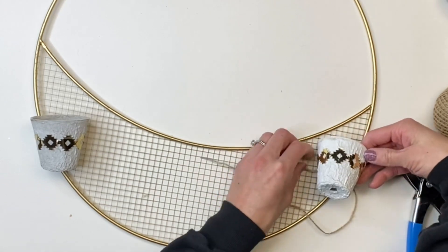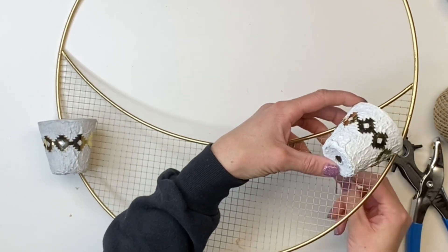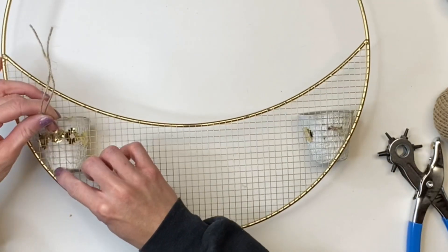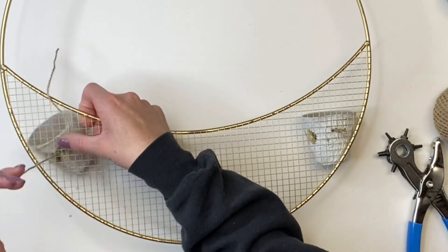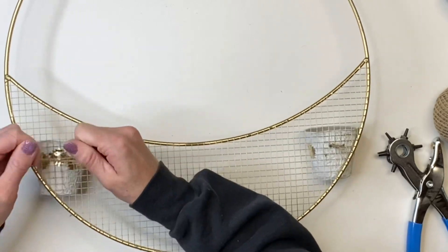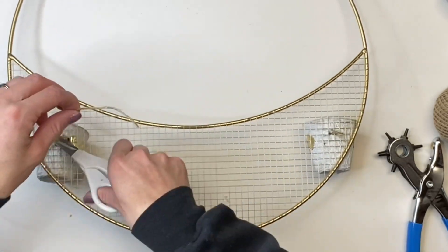And I liked how this wreath form had the half a grid here. So you could really do so many different things with this. And I'm trying to make this as even as I can by kind of eyeballing it. But you can count the grids if you want it to be exact.